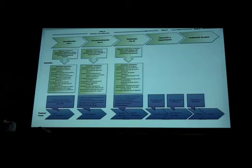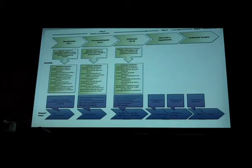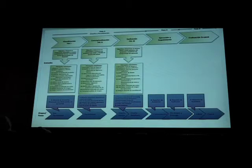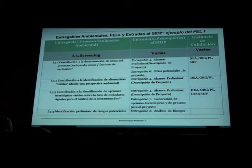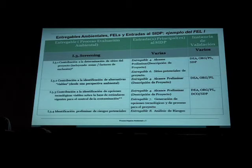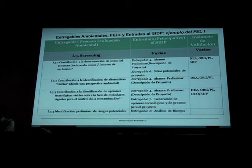Once we did the gap analysis, we mapped very clearly what inputs the EIA has to provide into the front-end loading or project development process to make it a robust system. We went through each of the different stages of the project development process, incorporating and understanding what input is required from the environmental assessment. For each specific point of the EIA, we identified the different gate entry points into the project development system, and also what resources for validation and which people or organizations need to be involved to validate each of these points.